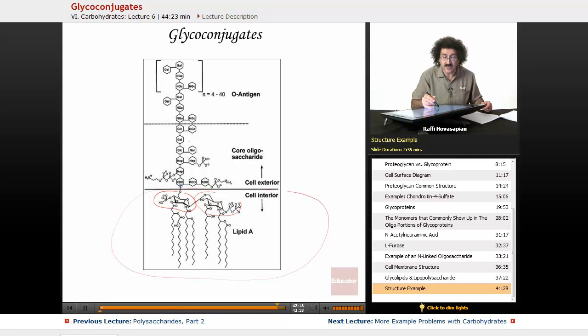So this is going to be outside the cell. This part is the core oligosaccharide. So this part is always the same, this particular arrangement: KDO, KDO, HEP, HEP, GLC, GAL, GLC, NGC.